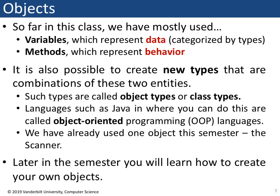These types which we can create are called object types or class types. Languages like Java where you can declare these objects are called object-oriented programming languages. It's common to hear the acronym OOP representing object-oriented programming. This is something you're going to hear and deal with for the rest of your time at Vanderbilt, and definitely if you go into programming as a career.